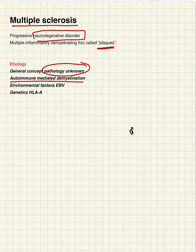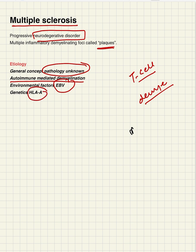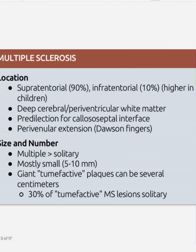It could be called autoimmune-mediated demyelination, in which there is a cross-talk between the innate and adaptive immune system, where dendritic cells function as antigen-presenting cells. Pro-inflammatory cytokines and T cells, along with macrophages and microglial activation, play a critical role, leading to demyelination. Environmental factors like Epstein-Barr virus and genetic factors like HLA also play a role.